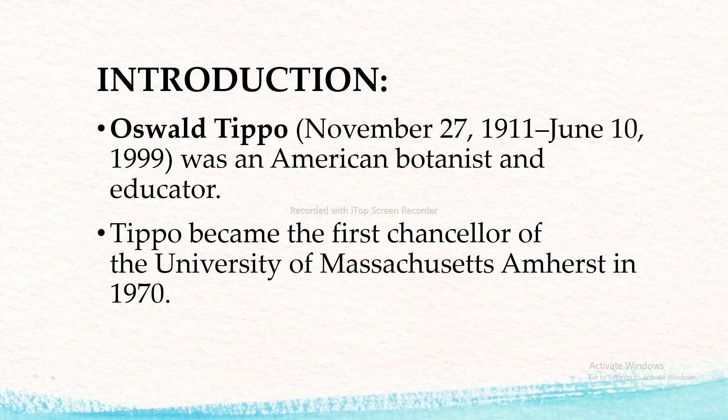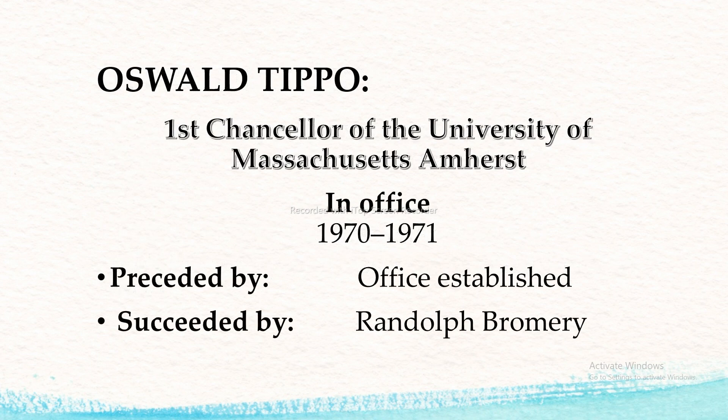First of all, I will discuss about the introduction. Oswald Tippo was born on November 27, 1911, and died on June 10th, 1999. He was an American botanist and educator. Tippo became the first Chancellor of the University of Massachusetts Amherst in 1970, serving in office from 1970 to 1971, succeeded by Randolph Bromery.